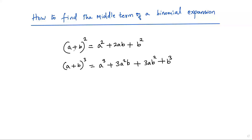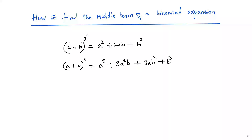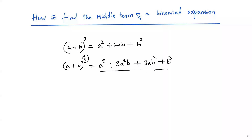If you consider the first algebraic identity, we have a binomial with exponent 2, and on the right side its expansion contains three terms. For the second algebraic identity, we have binomial (a + b) with exponent 3, and its expansion contains four terms.